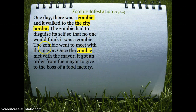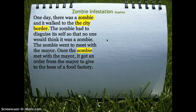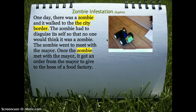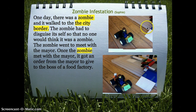And this is our city story. One day there was a zombie, and it walked into the city border. The zombie had to disguise itself so that no one would think it was a zombie. The zombie went to meet with the mayor, and once the zombie met with the mayor, the mayor gave it orders to give to the food factory boss. And that's the zombie entering the city and going to meet with the mayor.